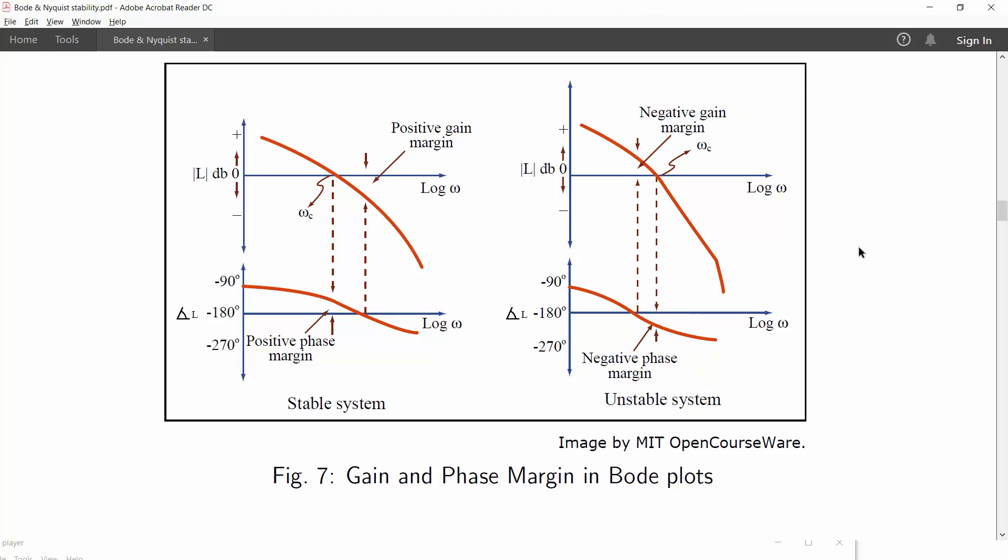One thing more to note here is that if gain crossover frequency and phase crossover frequencies are equal, that is Omega GC becomes equal to Omega PC, then phase margin and gain margin will become 0, and this will make the system marginally stable.